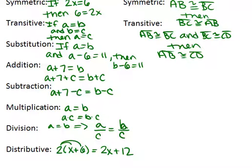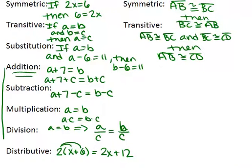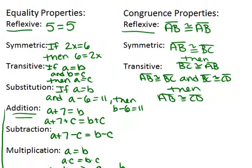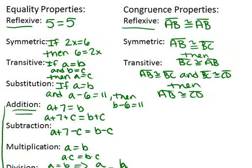It might seem like a lot to remember, but one thing to keep in mind is a lot of it is sort of intuitive. For example, the addition property — it's just that you're allowed to add the same thing to both sides of the equation. That's the same for all of these operation properties. If you just remember some of the key ones like reflexive and transitive, a lot of them will come pretty naturally.